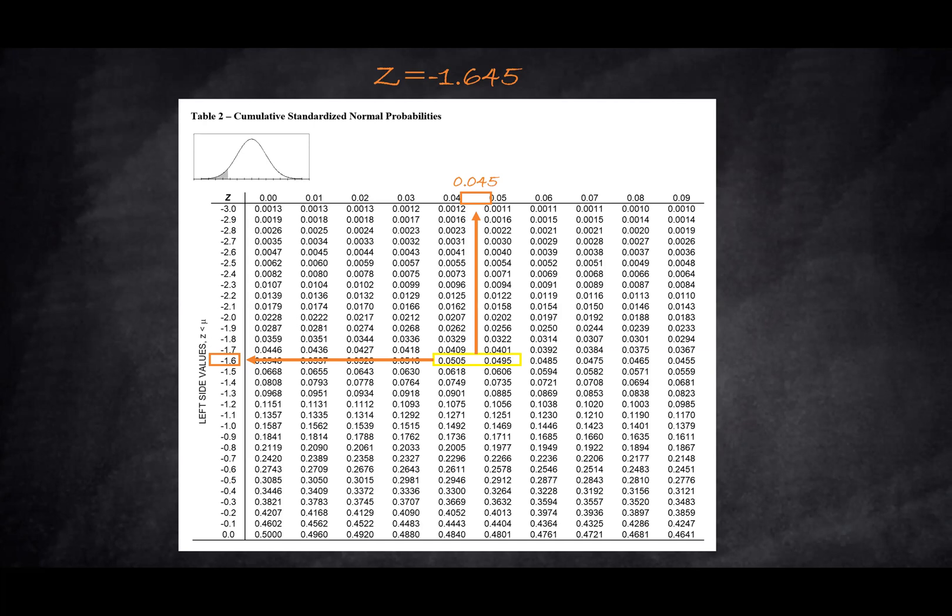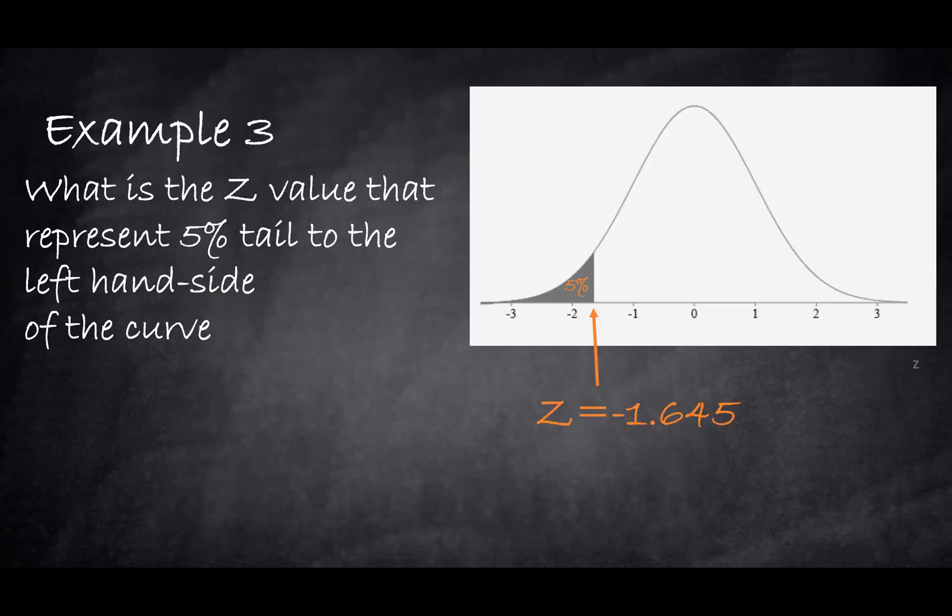It depends if you need the right-hand side tail or the left-hand side tail; that's how the sign will be defined. We need the left-hand side tail, so the sign will be negative. Here it is in the representation. You can see the left-hand side will have a negative 1.645 Z value.